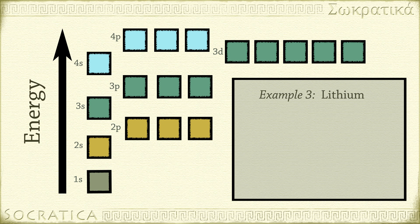Lithium has three electrons, so we know it will start to fill a higher orbital, since the 1s orbital can only hold two electrons. We write this as 1s2 2s1. Remember that the large numbers represent the energy levels of the orbitals, and the superscripts represent the number of electrons in that orbital.